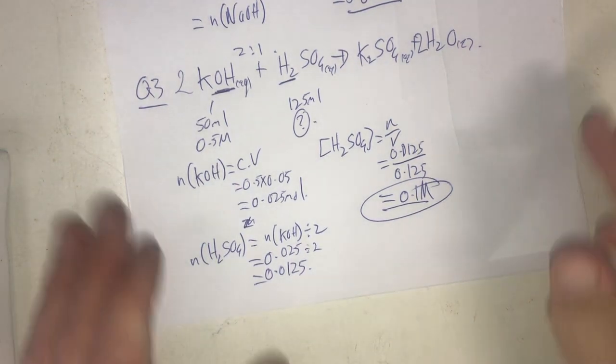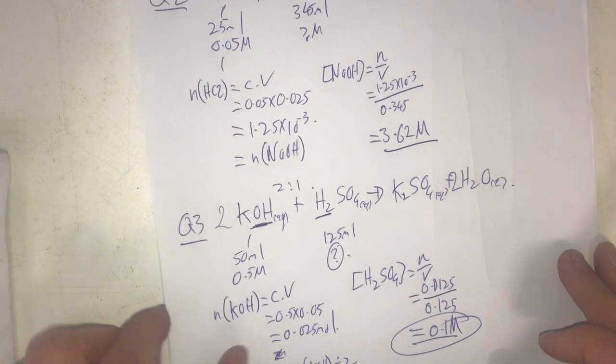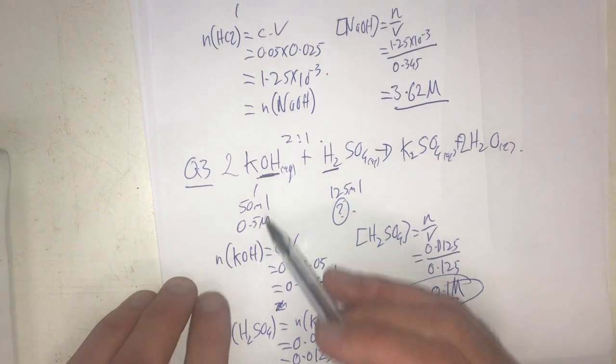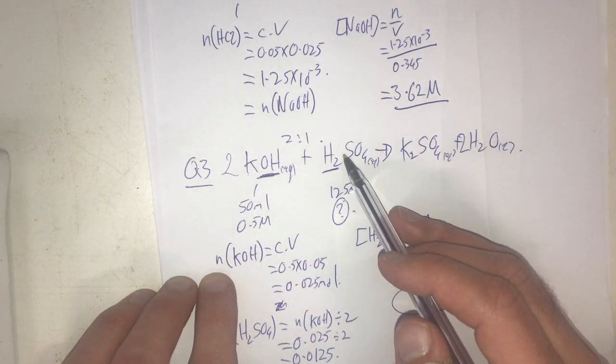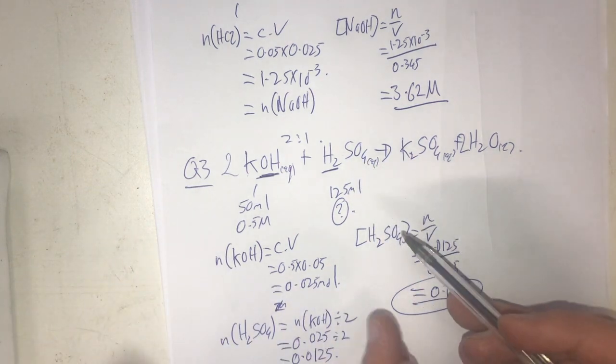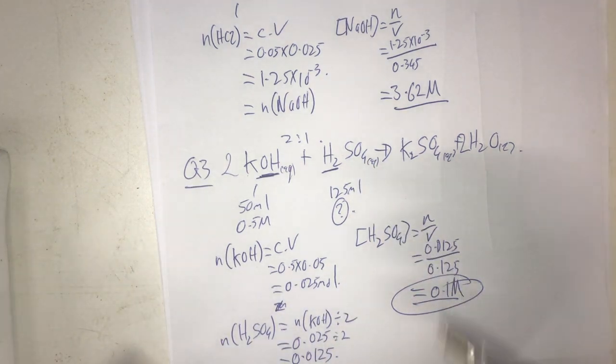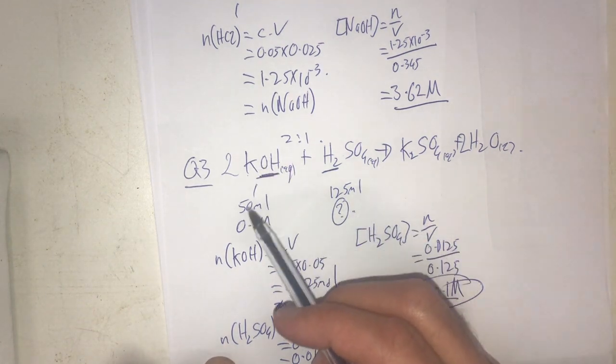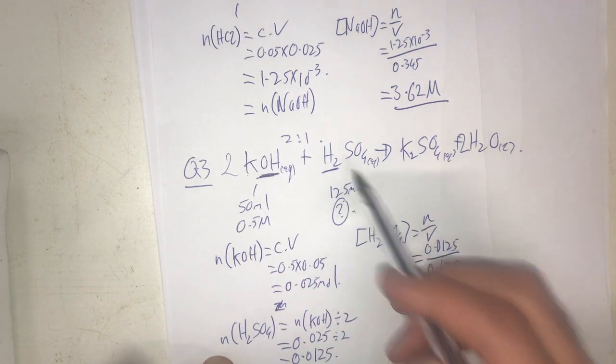In each of these questions, what we're doing is we are determining the number of moles of something we know, and ratioing it to find the number of moles of what we don't know, and then doing whatever the question asks us to do. That's the fundamentals of titrations - we always find the number of moles of something in an equation, and then ratio it to the other reactant.